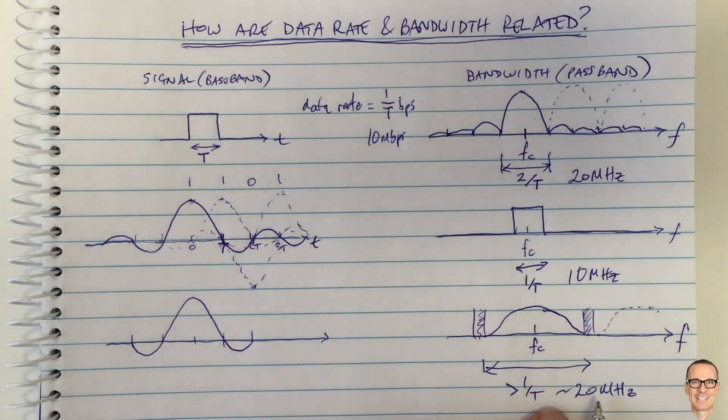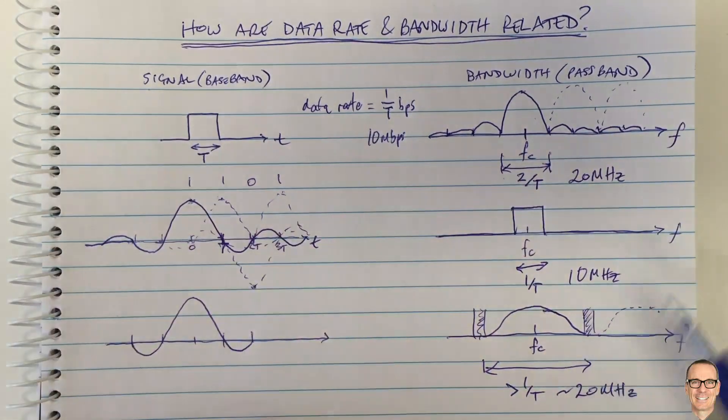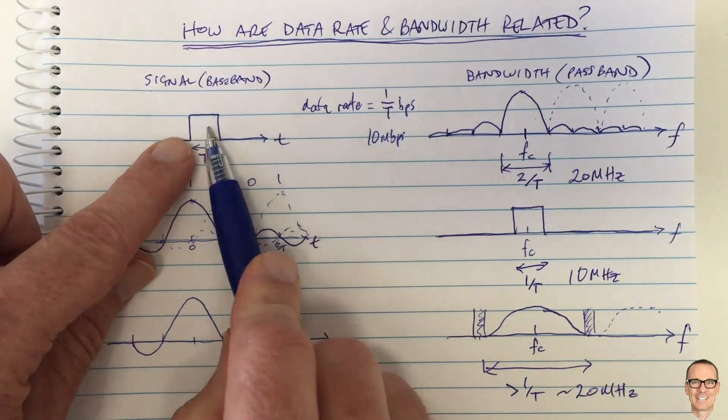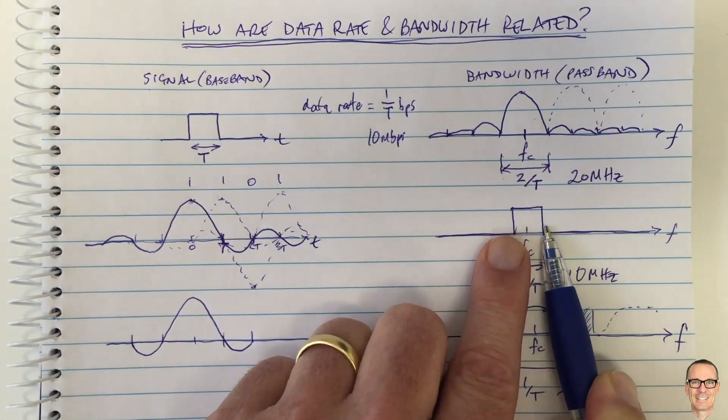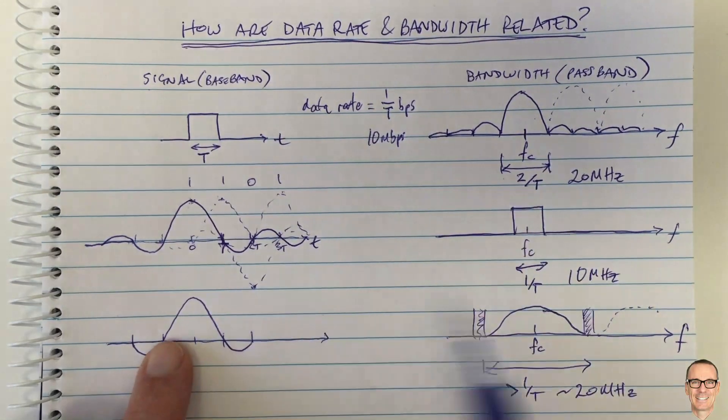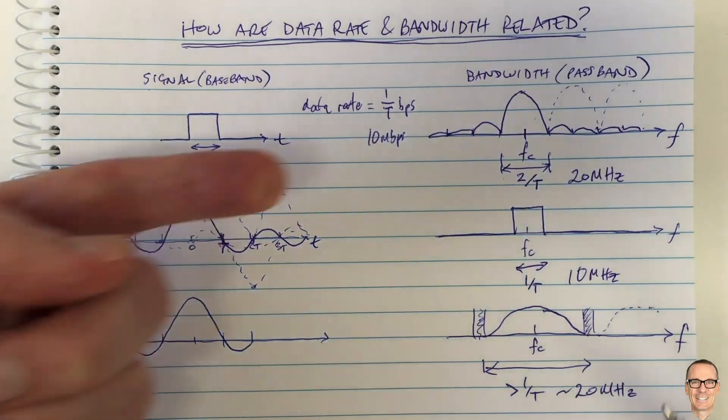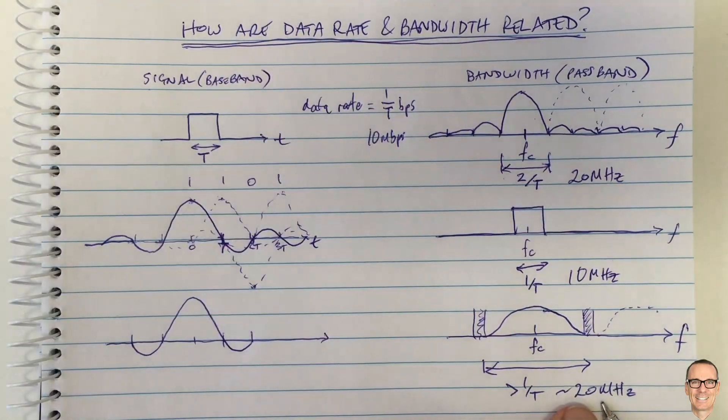This is a compromise because you're realizing you can't have it exactly finite in time and you can't have it exactly finite in frequency. So we have a compromise. And so this is how the data rate relates to the bandwidth.